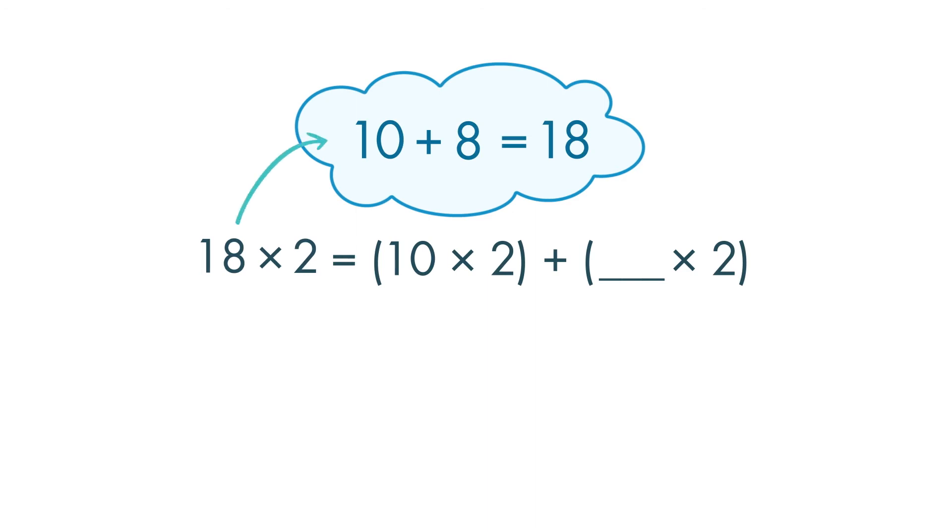Now that we have broken apart the 18, we just need to multiply each number by 2.